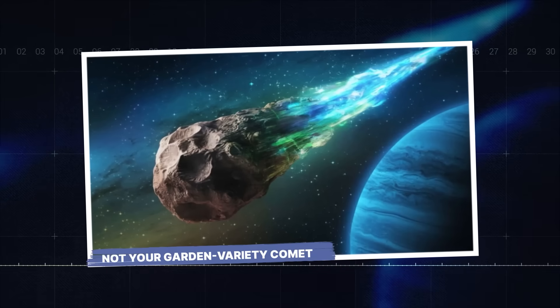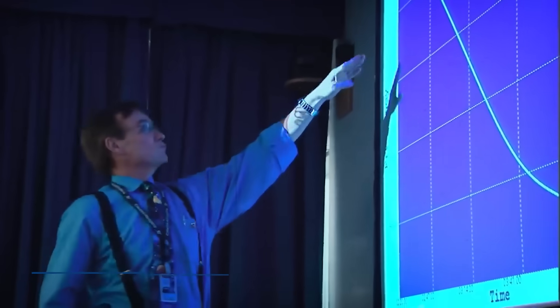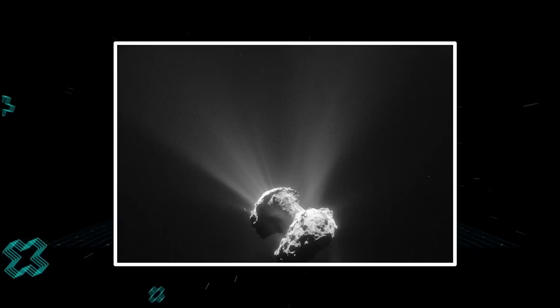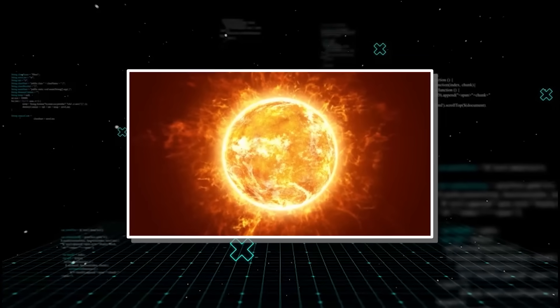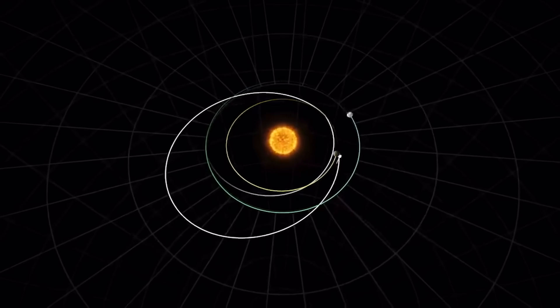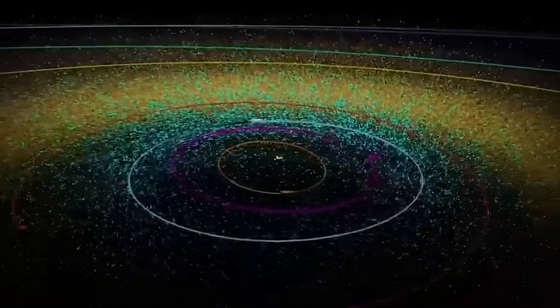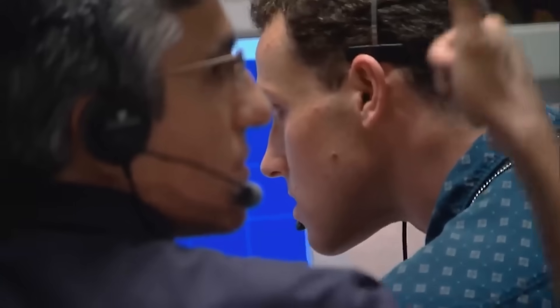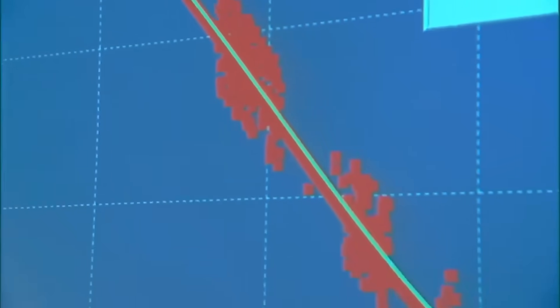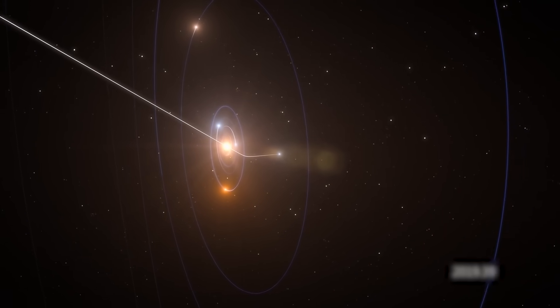Not your garden-variety comet. You see, when something in space moves in a way that gravity alone can't explain, scientists call it non-gravitational acceleration. It's usually caused by jets of gas bursting from a comet's surface as it's heated by the sun, giving it a tiny, unpredictable nudge. It's the cosmic equivalent of a leaky steam pipe. But the force moving 3I Atlas wasn't tiny, and it certainly wasn't unpredictable. Astrometric tracking, the high-precision measurement of an object's position, confirmed it. 3I Atlas was not following a path dictated by gravity. There was a consistent, sustained force pushing it, and the direction of that push aligned perfectly with its impossible, sun-pointing tail. This wasn't a leak. This was propulsion.